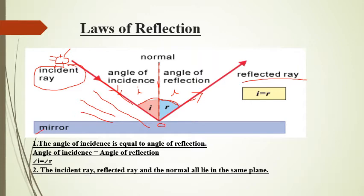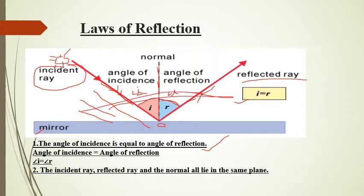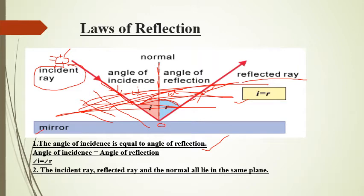What are the laws of reflection? There are mainly two laws. First: the angle of incidence is equal to the angle of reflection, that is, angle I equals angle R. Second law: the incident ray, the reflected ray, and the normal — these three things all lie in one plane. So these are the basic laws of reflection and the different terms related to it.